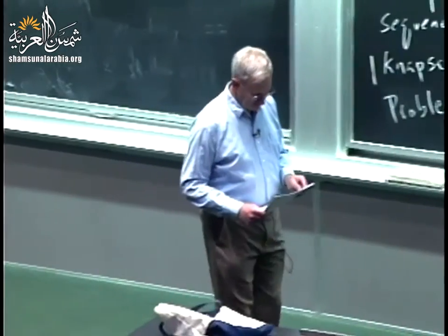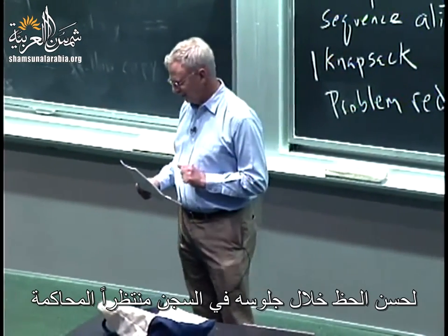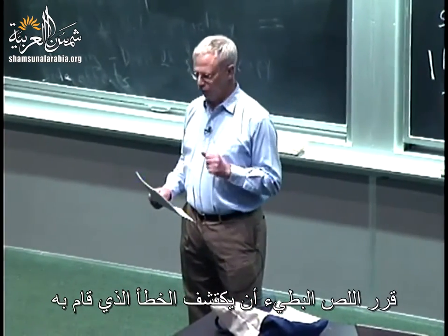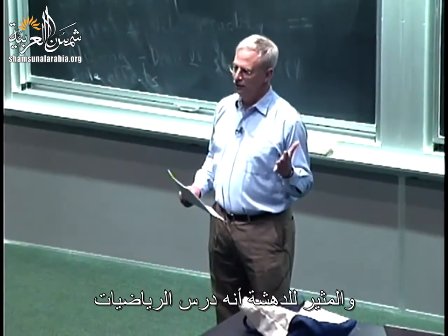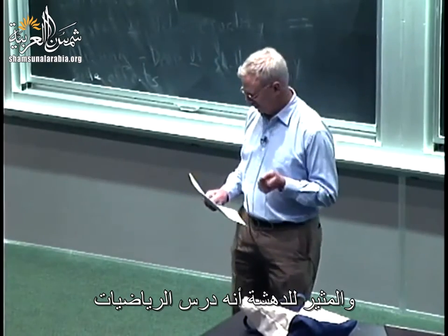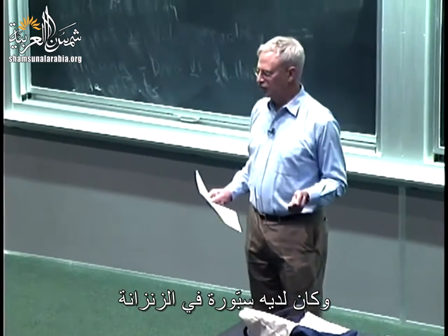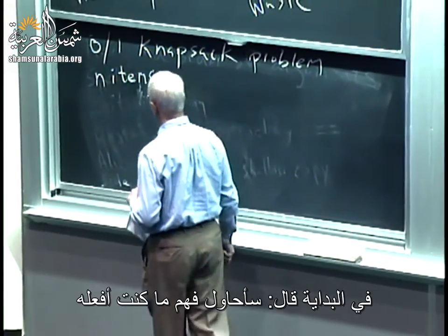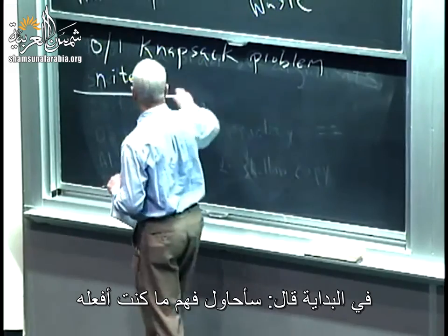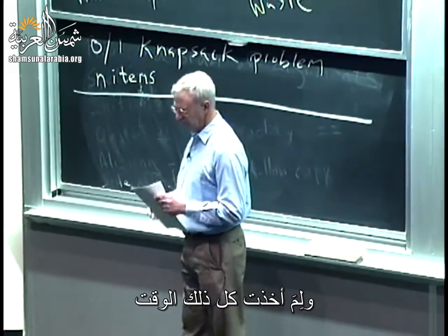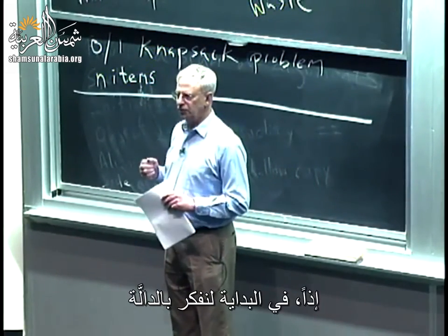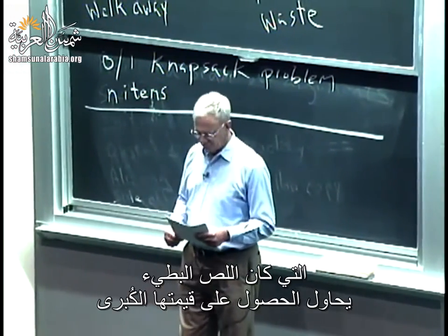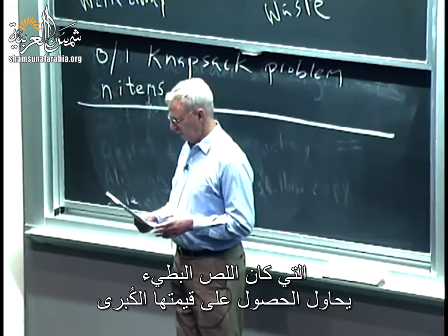Fortunately, while sitting in jail awaiting trial, the slow thief decided to figure out what was wrong. He had studied mathematics and had a blackboard in the cell, so he was able to work it out. He first said, let me try and figure out what I was really doing, and why it took so long.